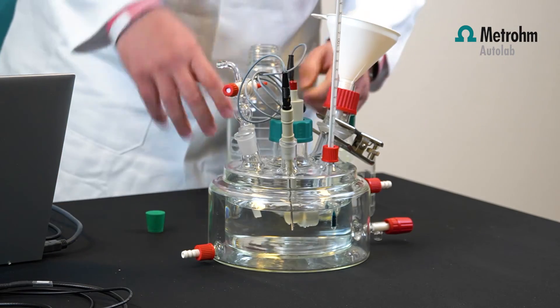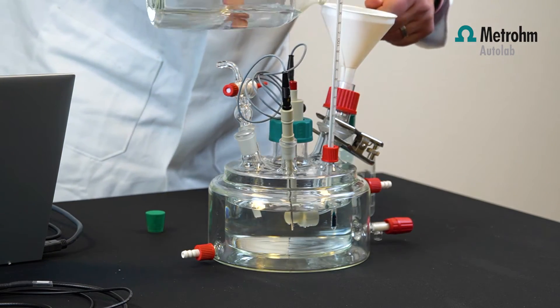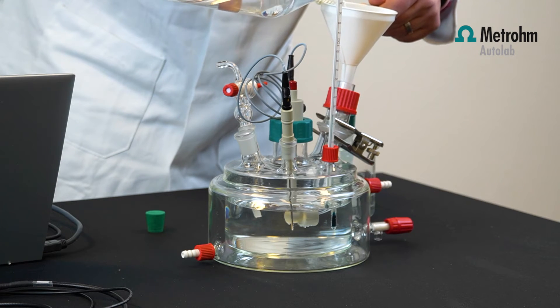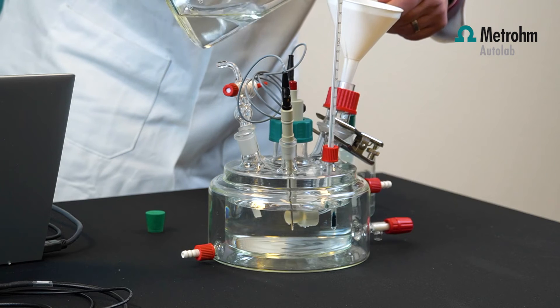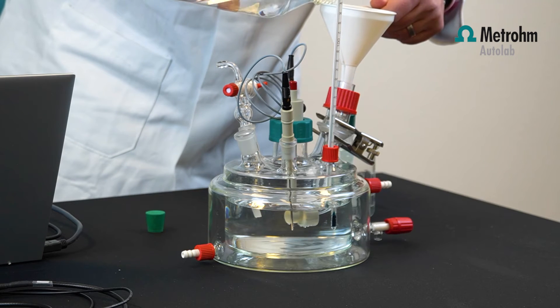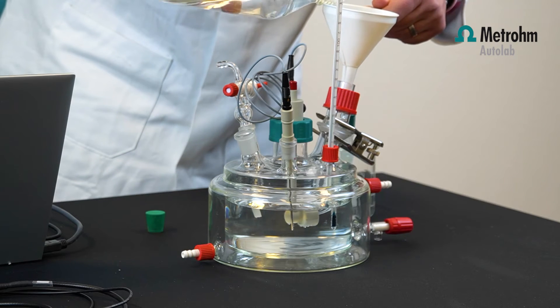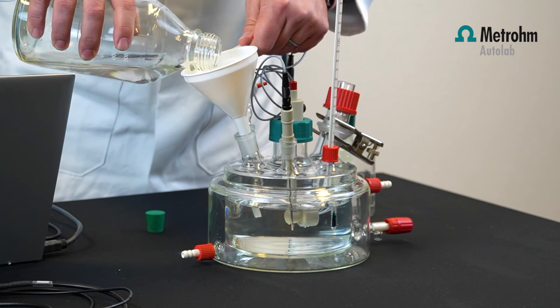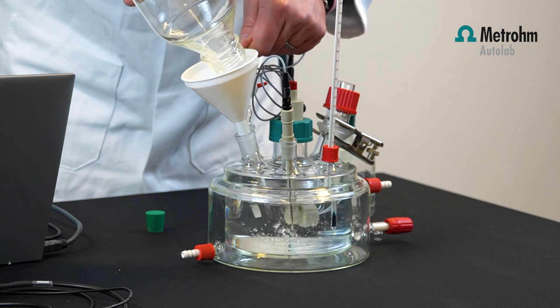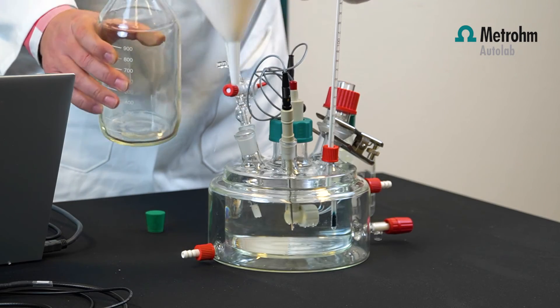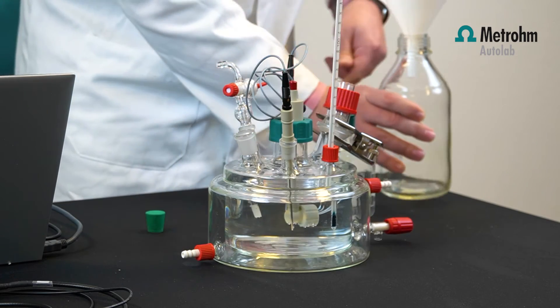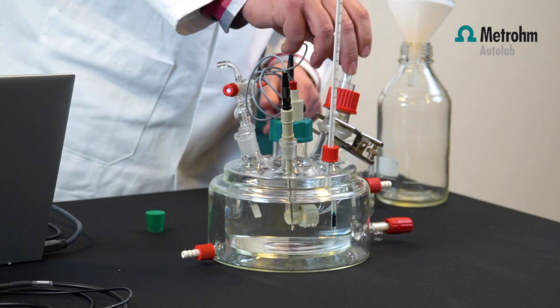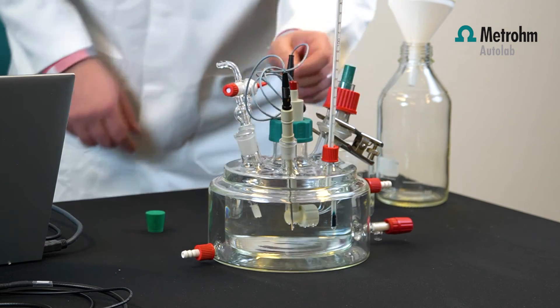Next, fill the Luggin capillary as well. Be sure that the Luggin capillary is below the surface of the water level. You need to be sure that the working electrode is low enough and the Luggin capillary is underneath the water level. Fill the Luggin capillary. After we put the reference electrode in, the rest can go in the corrosion cell.